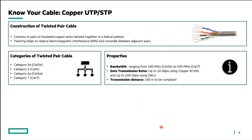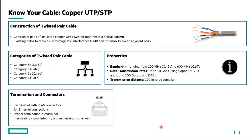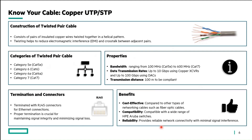Data transmission rates for copper are up to 10 Gbps when using copper transceivers, and up to 100 Gbps when using DAC cables. For transmission distance, it supports around 10 meters to be compliant. These copper cables are terminated with RJ45 connectors using Ethernet cable. Proper connection is crucial for maintaining signal integrity and minimizing signal loss. Benefits of copper cable include cost-effectiveness compared to fiber cables, compatibility over a wide range of HPE Aruba switches, and reliable network connectivity with minimal signal interference.